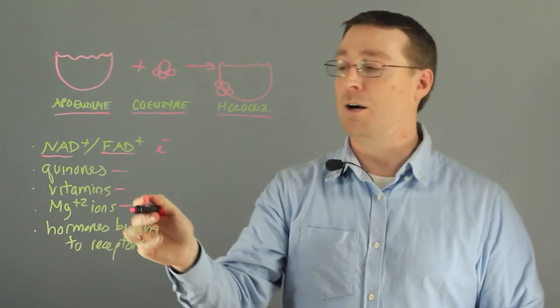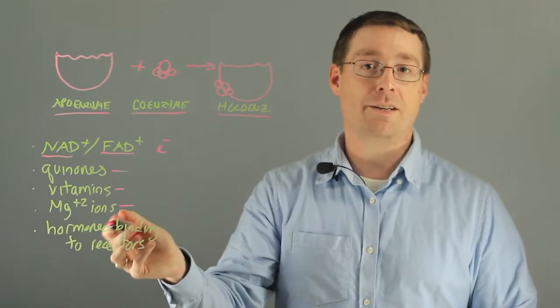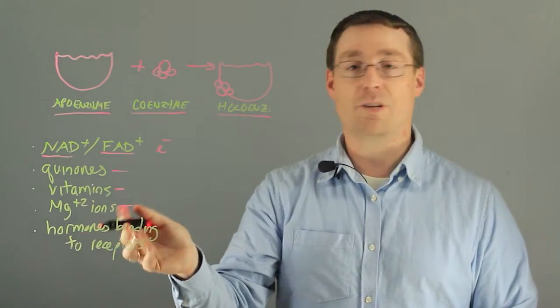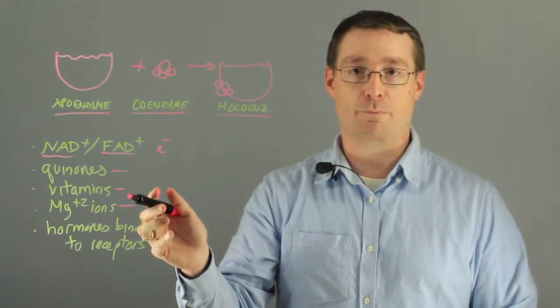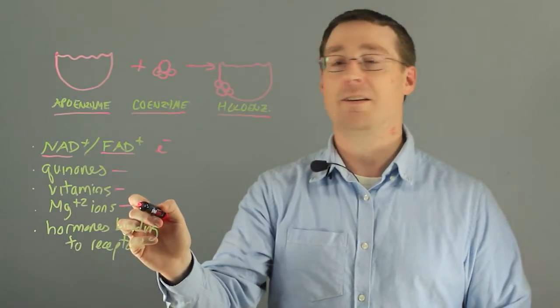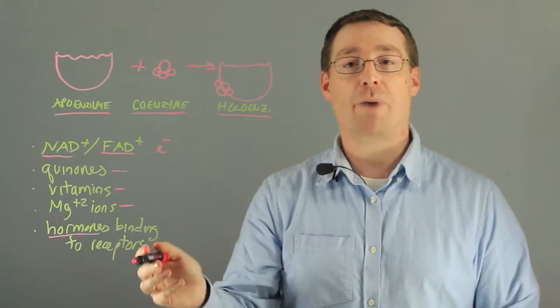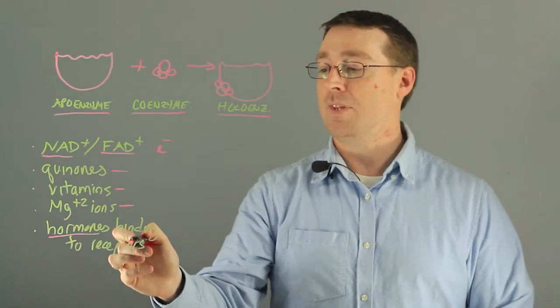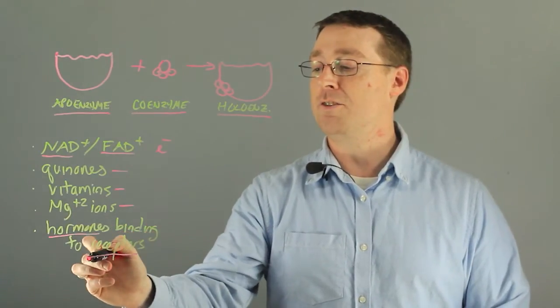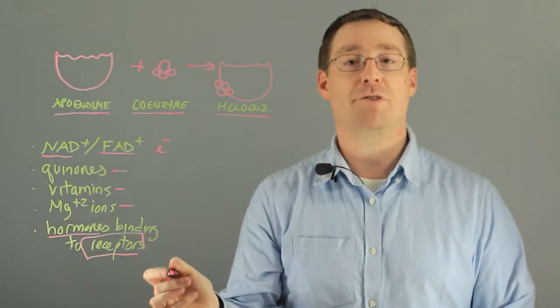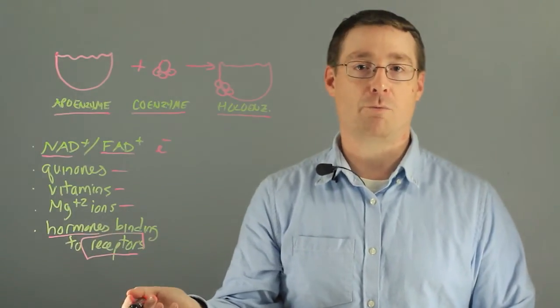Magnesium ions bind through ionic bonding to the substrate or enzyme part of that complex to facilitate enzyme function, and finally hormones can bind to their receptor, and this is the only way to induce enzyme receptor activity is in the presence of hormone.